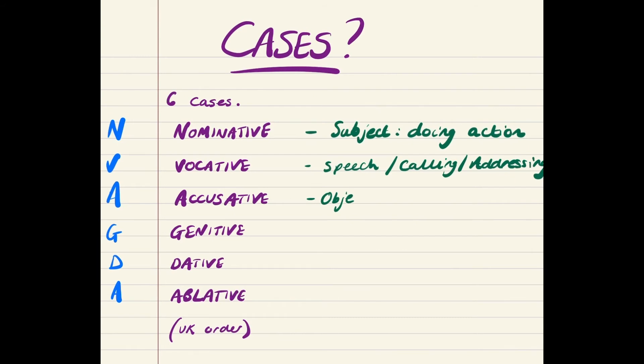Next, you have your accusative. The accusative, so this is the opposite of the nominative, it is the object of the sentence. It is having the action done to it. So, if I throw the ball, I am the nominative, throw is the verb, and the ball is the object. It is being thrown.